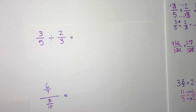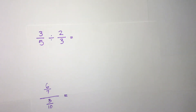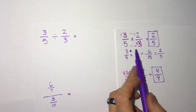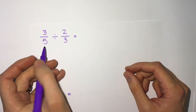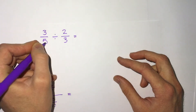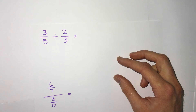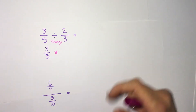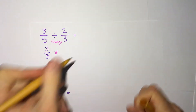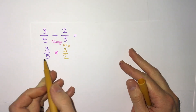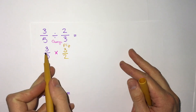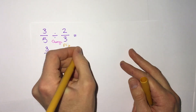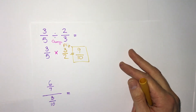Now dividing — we're covering this in the same video because dividing essentially involves the same steps as multiplication with one extra step. To divide two fractions, for example 3 fifths divided by 2 thirds, we use keep-change-flip: keep the first fraction, change the divided-by symbol to times, and flip the last fraction. So 2 thirds becomes 3 halves. Now 3 fifths divided by 2 thirds is the same as 3 fifths times 3 over 2. Nothing simplifies, so 3 times 3 is 9 and 5 times 2 is 10 — our answer is 9 tenths.